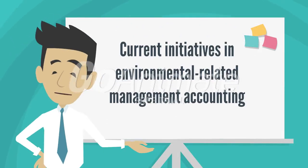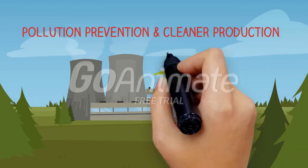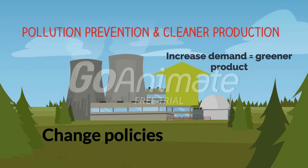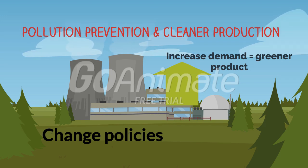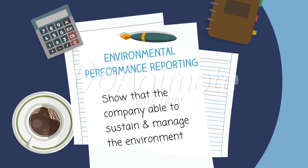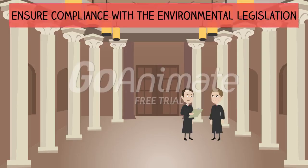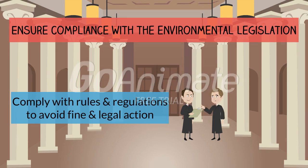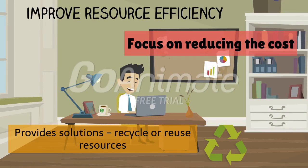Nowadays, there are many current initiatives in environmental-related management accounting. One of them is pollution prevention and cleaner production — the demand for greener products from users and the government is increasing, so companies need to change their policies to adapt. The next initiative is environmental performance reporting, with new requirements for reporting what the company is doing to sustain and manage the environment. The third initiative is to ensure compliance with environmental legislation, to avoid fines, penalties, and legal action. The last initiative is to improve resource efficiency by focusing on reducing costs, providing solutions such as recycling or reusing resources.